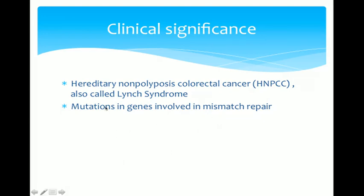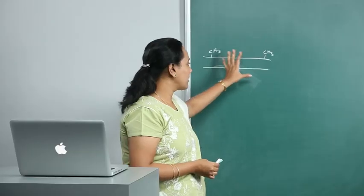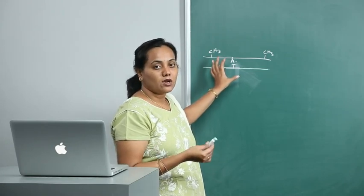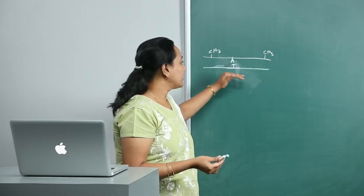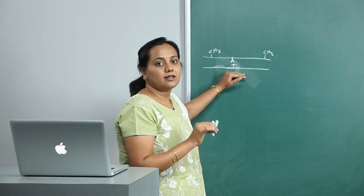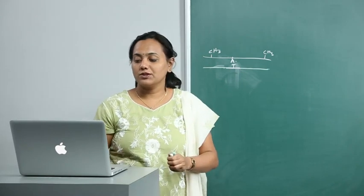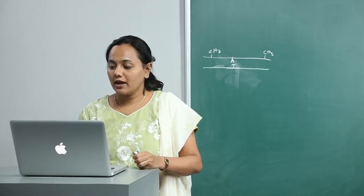The clinical significance of mismatch repair: there is a condition called hereditary non-polyposis colorectal cancer (HNPCC), also called Lynch syndrome. Mutations have been found in genes involved in mismatch repair. If there is a mutation in the Mut proteins or their analogous proteins in humans, these proteins cannot recognize the mismatch and cannot cleave, resulting in disease. Mutations in genes involved in mismatch repair occur in HNPCC.